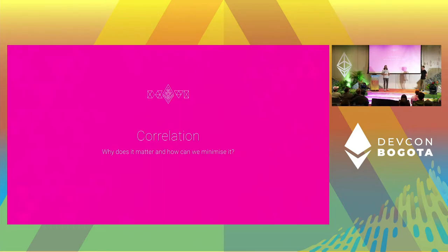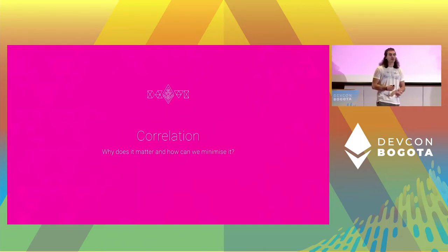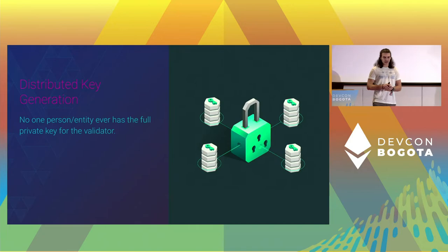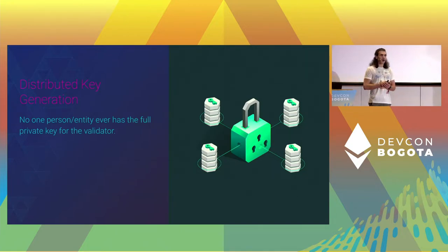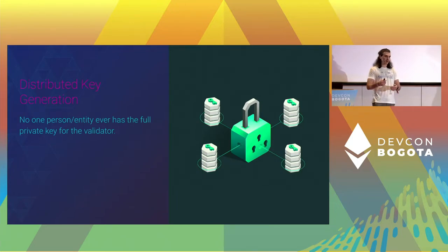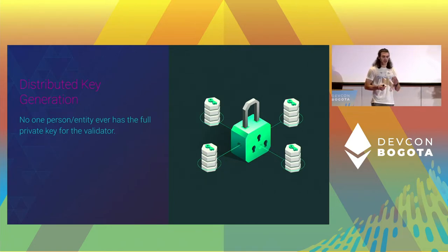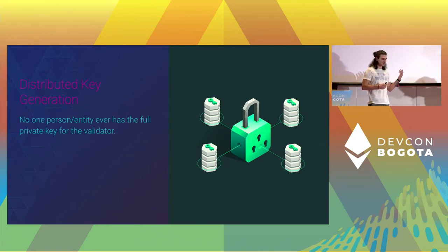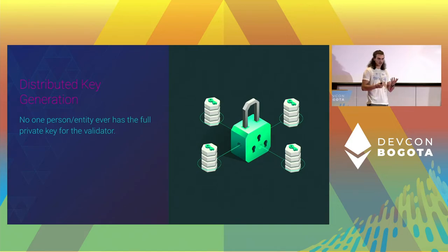Now we'd like to discuss how we at Obol have made certain design decisions to minimize correlation risk, because the title of this talk is how not to make things worse when we're trying to make them better. The first thing is private keys — in a validator, private keys are more or less everything. We've taken the decision not to allow any one entity to have the full private key. Instead, all operators come together and do a distributed key generation, where they all contribute entropy. At the end they each get their private keys and a proof that everyone took part fairly — there was never a moment where one person had the full private key.